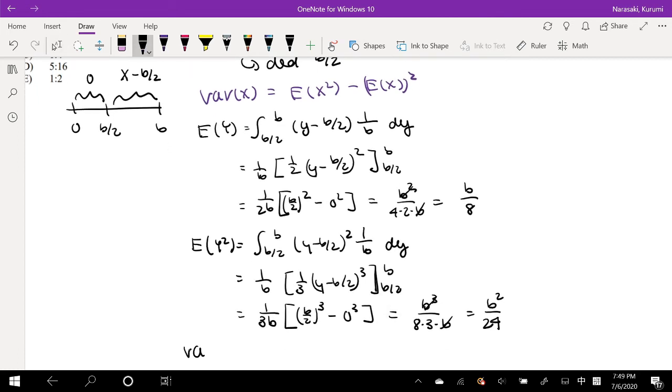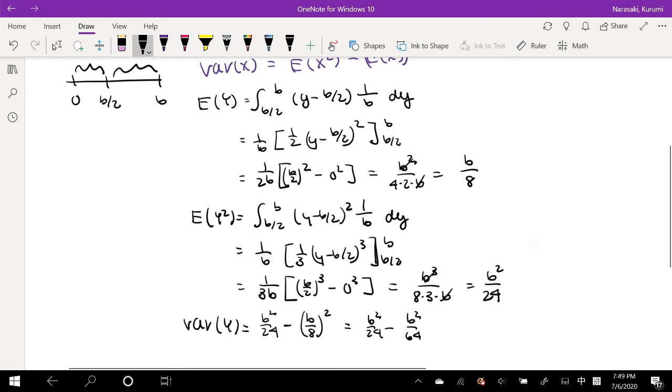Okay, what would be the variance of Y? Well, the variance of Y, we know is just this value right here, the b squared over 24, minus our expected value squared, right? This is equal to b squared over 24 minus b squared over 64. Alright, okay, so we got this, we got this, not too bad, not too bad. I'll use my calculator, so though, because, you know, math.